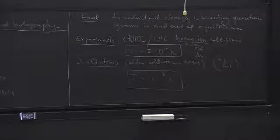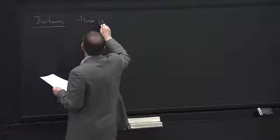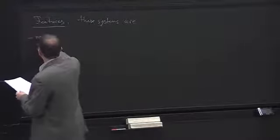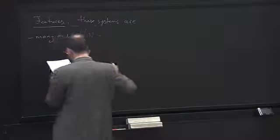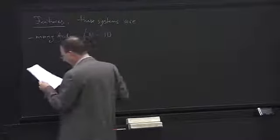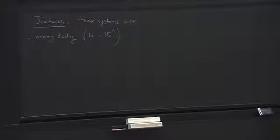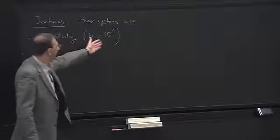Common features can be listed. First of all, these are many-body systems. And when I say many-body, there is some way to talk about the number of participants. Of course, if you have a relativistic system, it doesn't make sense to talk about the number of particles involved, because particles can be born and energy can be converted into mass all the time. But in a certain sense, it would be possible to talk about the number of participants.